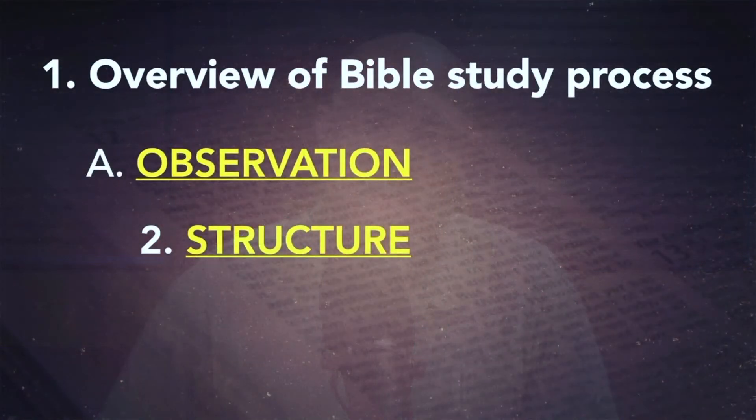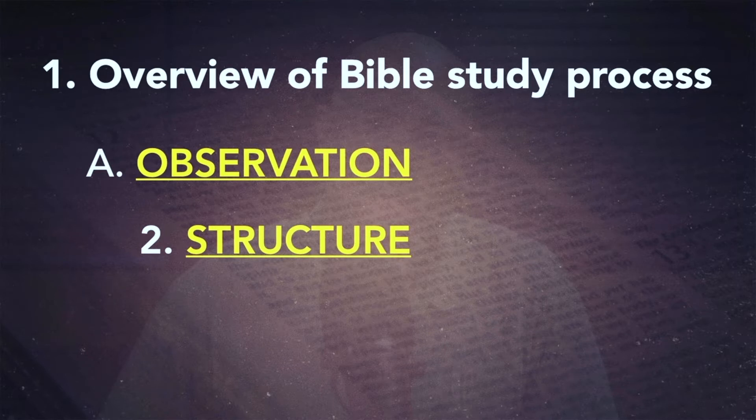Number two on your outline: the second thing we're trying to observe is the structure of the passage. The Bible is not just a random book of stories and sayings. What is the structure? First — letter A on your outline — what is the grammatical structure? In other words, what's the subject of the sentence? What is the object of the sentence? What is the main verb? I can almost hear some of you groaning — 'I thought I was done with grammar!' But it helps us to properly understand what the sentence is saying, who's being addressed, who's doing the addressing, and what they're talking about.